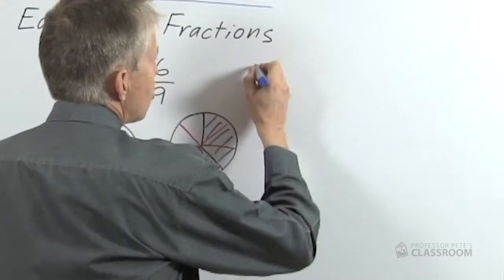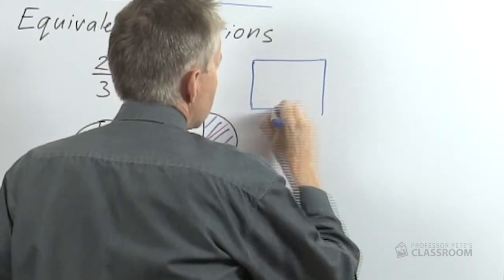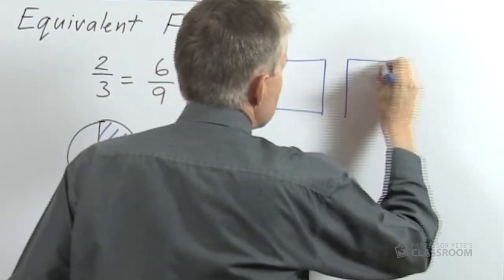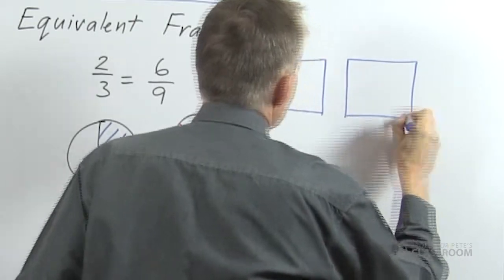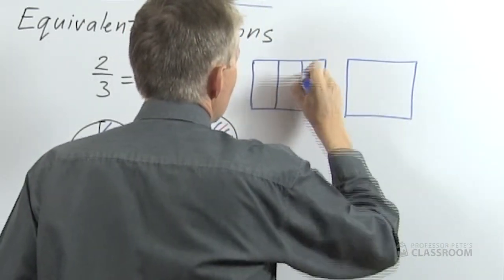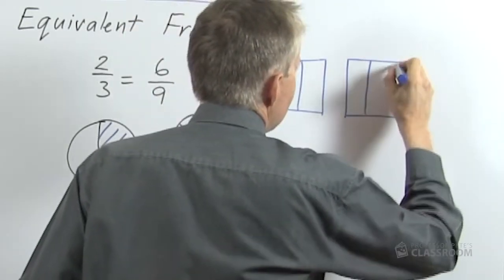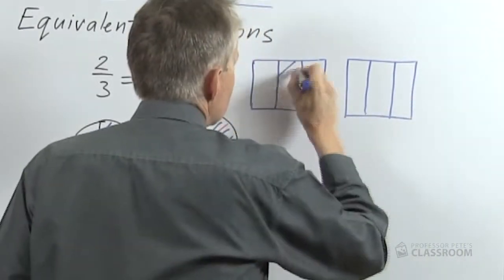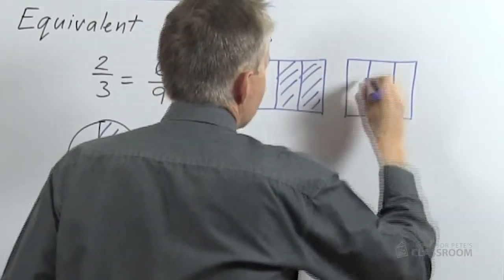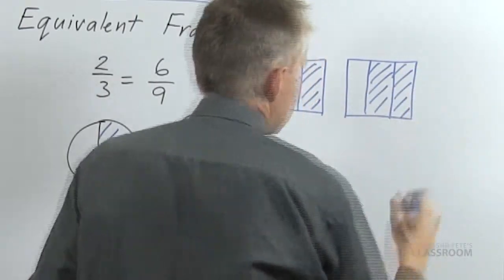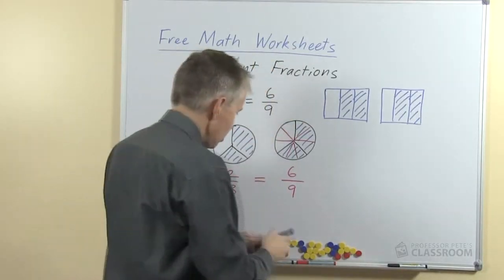We can show this with a rectangular region. I particularly like this way of showing it to students. So again we'll start with two shapes that are the same, we will divide them the same, we will shade the same amount. And so here again of course we can see there are two-thirds in each one.